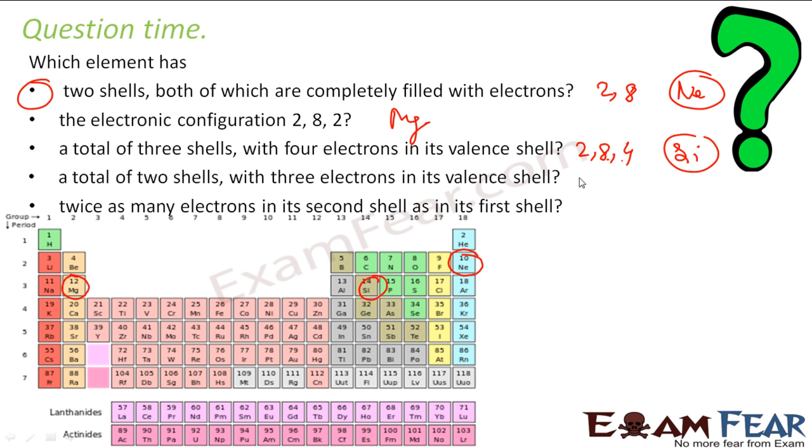Two shells with three in the valence electron, that is 2, 3 is my electronic configuration. 2 plus 3 is 5. 5 is boron. So boron is my answer.